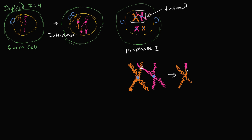They essentially break up and swap those little sections. So this one will now have a little piece from the mother — it might code for similar genes, but now it contains the mother's genetic information. And this one over here will now have the homologous piece from the father. This isn't always optimal — sometimes recombination can lead to nonsense code in DNA and a non-functional organism. But this happens fairly commonly in meiosis, and it's a way to get more variation.